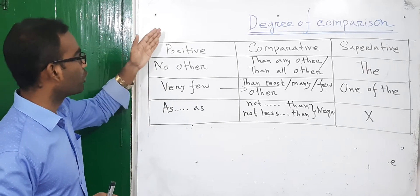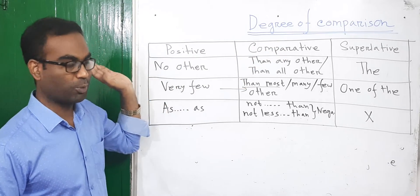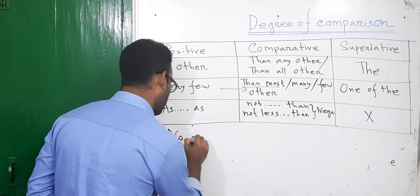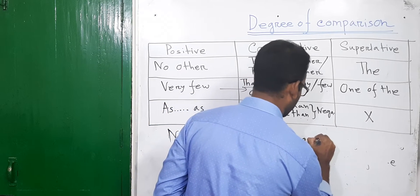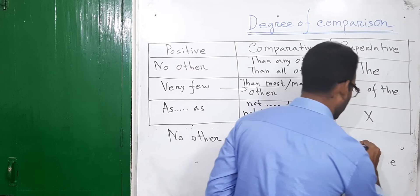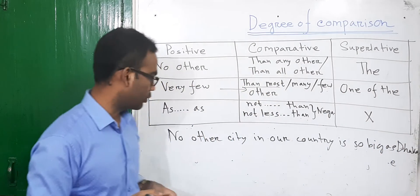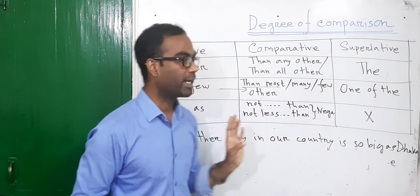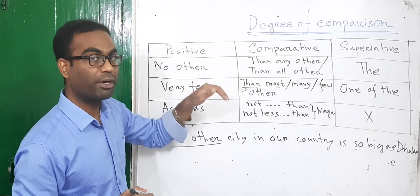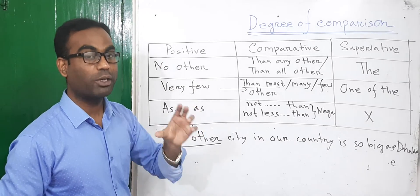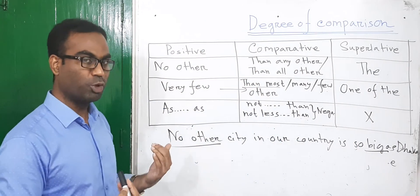The first expression with a positive sentence is 'no other'. We will change the language. Example: 'No other city in our country is so weak as Dhaka.' In this case, we see a positive sentence. This is a comparative formula — this is how to use the adjective. This is how to form the sentence using the same technique.